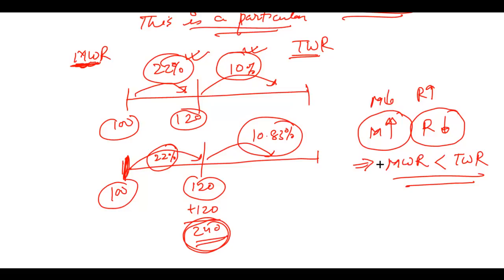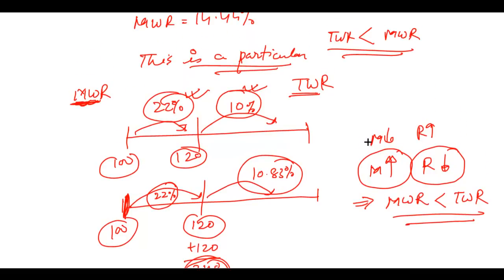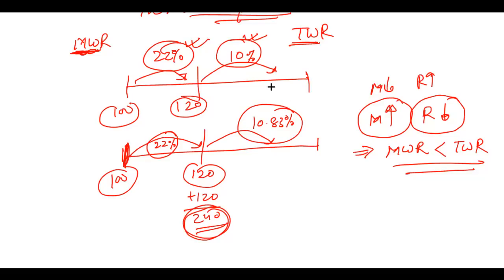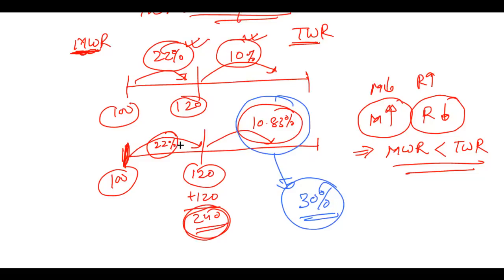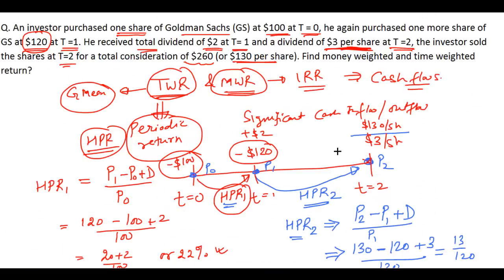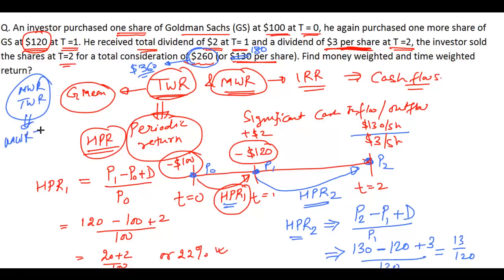If you want a situation where money weighted return is greater than time weighted return, it happens when more money is invested during a period of higher returns. You can test this yourself: instead of selling at $130 per share, try selling at $180 per share and compute MWR and TWR — you will find that MWR is greater than TWR. Thanks for watching. I hope you enjoyed the video. This is Ratan Gupta from KnowledgeVarsity.